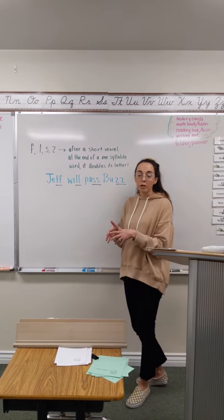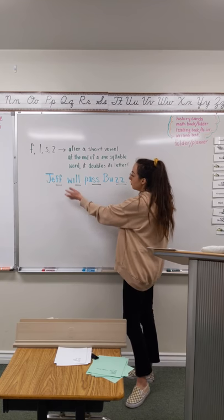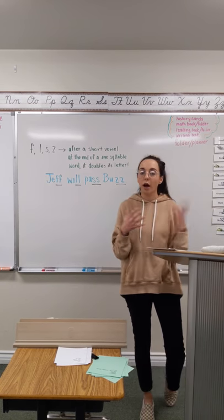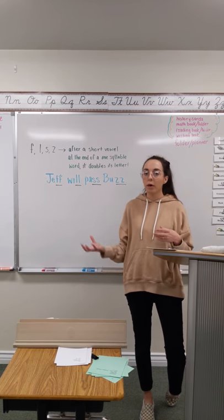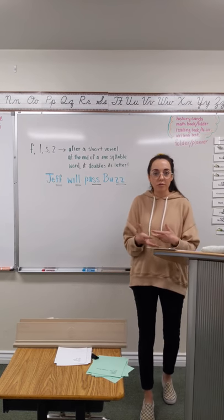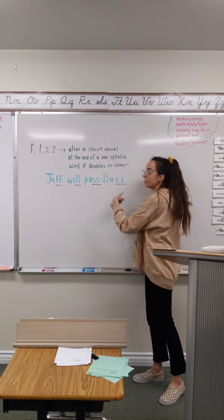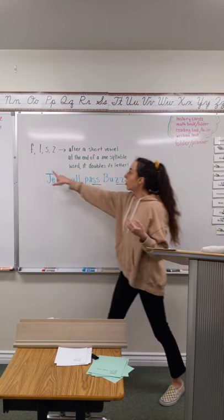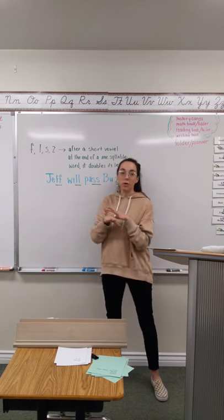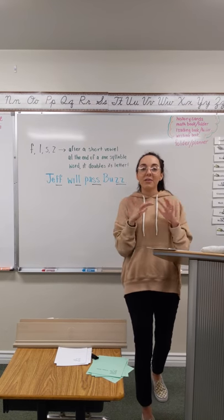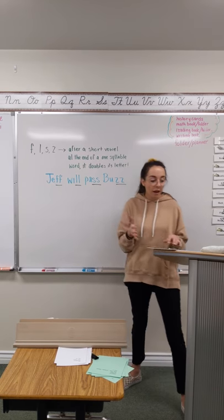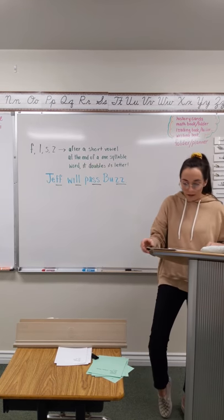So, I want you, for your homework, to draw a picture of Jeff will pass buzz. I want you to draw a picture of a boy named Jeff, a boy named Buzz, what happens in that story. And I want you to write this sentence underneath it so that you can really recall our double rule for F, L, S, and Z, not W. Those are the only four letters that are going to happen. And so, we really want to make sure that you have that.